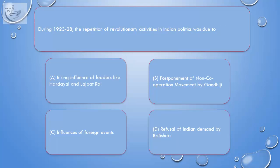Question: During 1923–28, the repetition of revolutionary activities in Indian politics was due to: A. Rising influence of leaders like Hardayal and Lala Lajpat Rai. B. Postponement of non-cooperation movement by Gandhiji. C. Influences of foreign events. D. Refusal of Indian demand by Britishers.